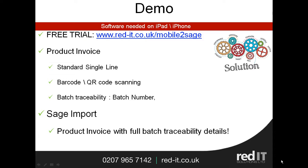When you create product invoices in Sage 50, you normally put it in one line at a time. What we've done is we've enhanced that with an add-on function so that you can basically scan the barcode and use that to produce your invoice. It's great for things like van sales and people in the food industry. In that QR code you can have lots of information — batch traceability information like batch numbers, use-by dates, and things like that.